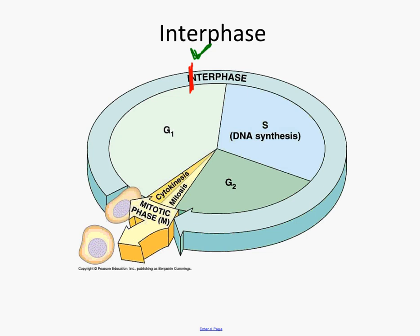But some do enter S phase. Again, in S phase, DNA replicates. In people, we go from 46 chromosomes per cell to 92.